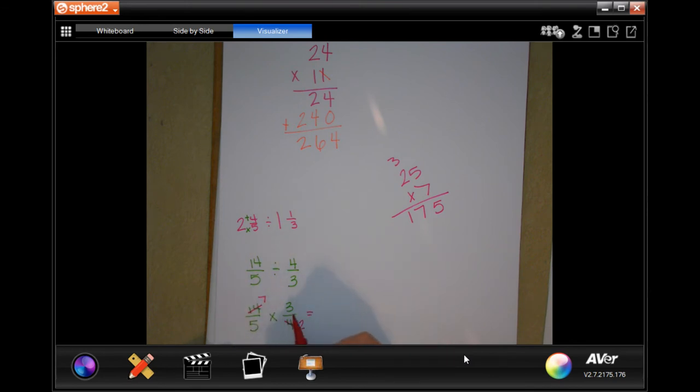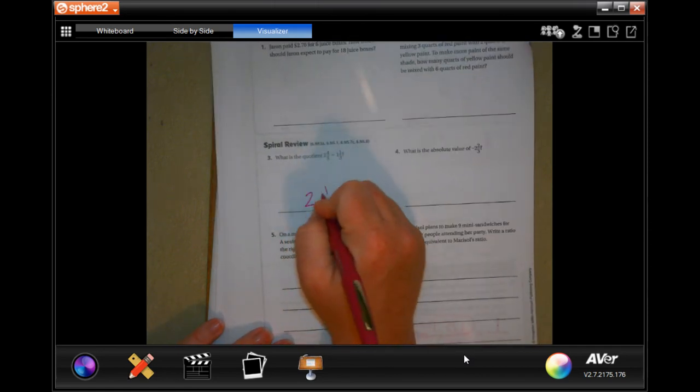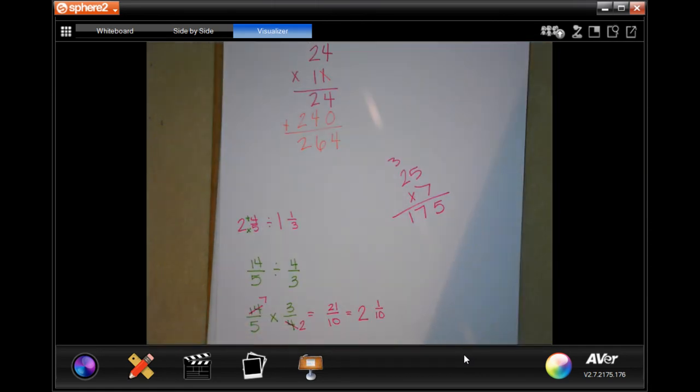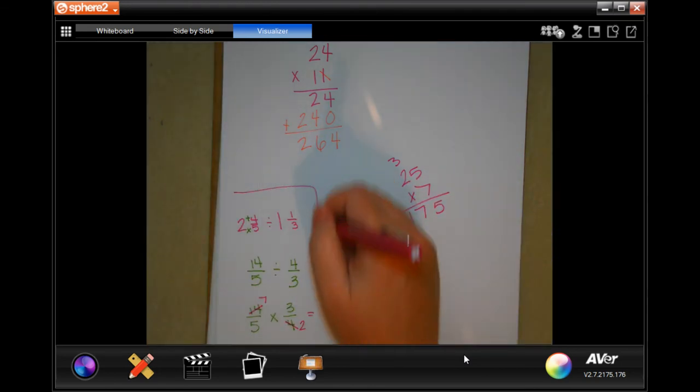So then, we have nothing that can, we have four prime numbers there, so nothing's going to be able to be reduced any further. So then I have 7 times 3 is 21, and 5 times 2 is 10. Well, 10 is going to go into 21 in order to make it back into a mixed number. 10 is going to go into 21 two times. I would have 1 left over, and I would keep my denominator. So 2 and 1 tenth. You need to make sure that you write your work down. So pause it, go back, do whatever you need to do to write your work down.